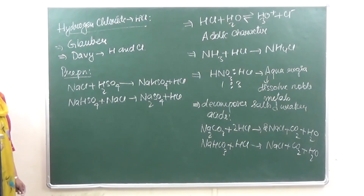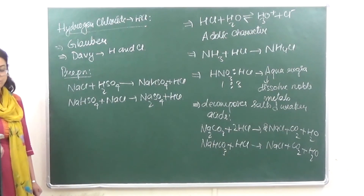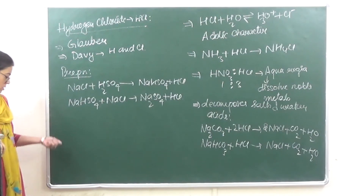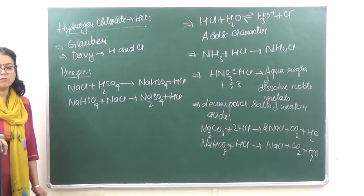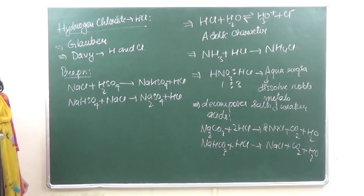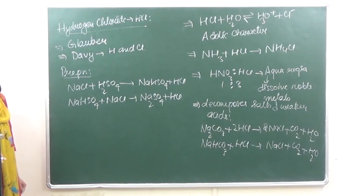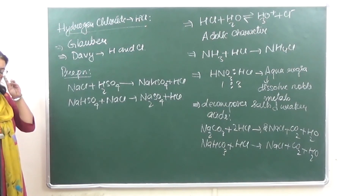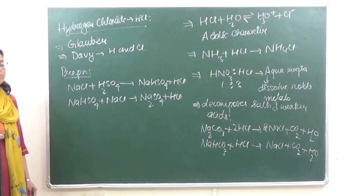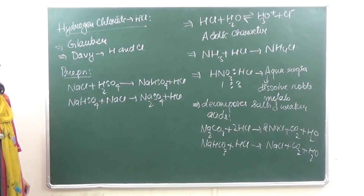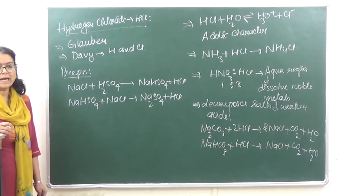Uses of HCl: Number one — it is used in the manufacture of Cl2, NH4Cl, and glucose. Number two — it is used for extracting glue from bones and purifying bone black. Number three — it is used in medicine and as a laboratory reagent.